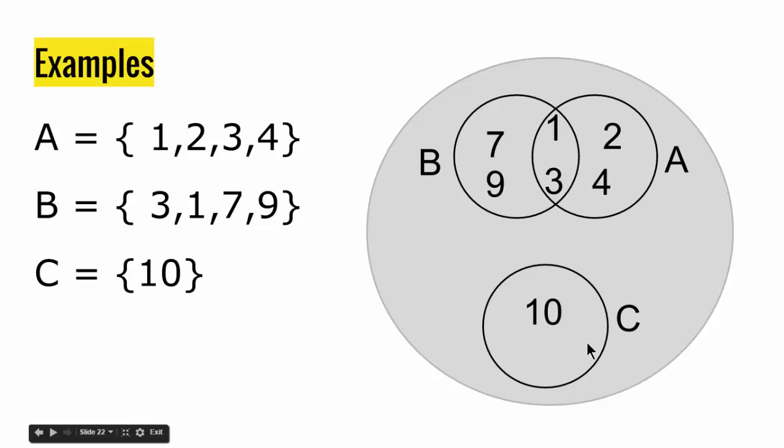But we see since there is no relation between C and the sets B and A, or because they don't share any elements, we just leave it out.